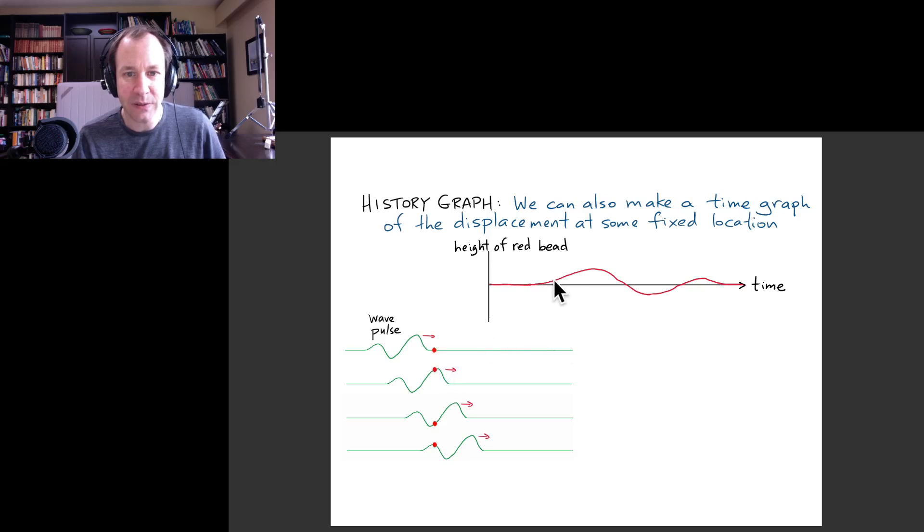When this first peak hits it, the bead moves upward, and so then on the time graph, the displacement is positive for a while. A little bit later, the bead is actually below its equilibrium position as this downward part of the pulse passes by. Then finally, it goes upward again, and then it goes flat.